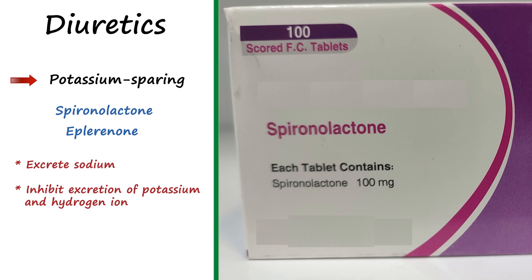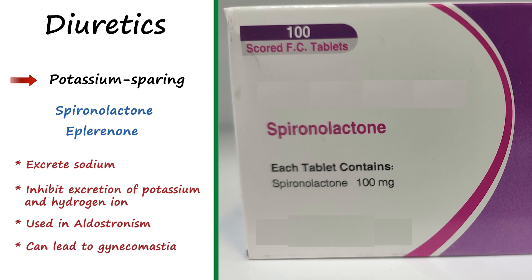All medications in this class cause sodium to be excreted and inhibit the excretion of potassium and hydrogen ions — that is why they are called potassium-sparing. One of the important indications of spironolactone is aldosteronism, or elevated levels of aldosterone in the body. Spironolactone can cause alterations in hormonal balance and lead to conditions including gynecomastia; therefore, it should be used with more caution.